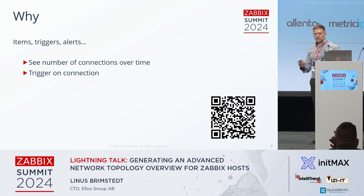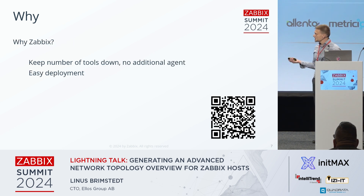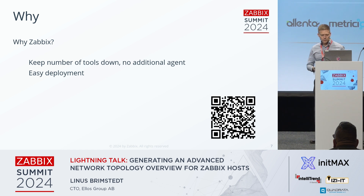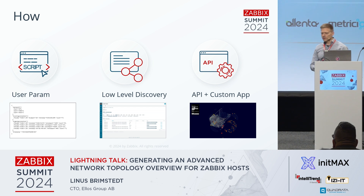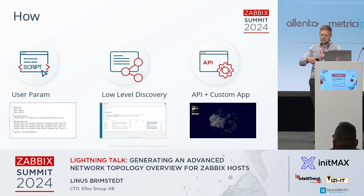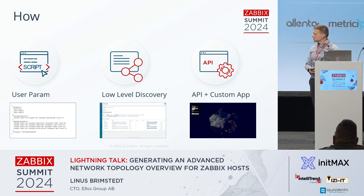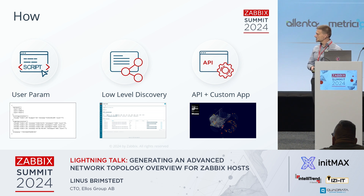Since this is using Zabbix, we have the full power of Zabbix triggers and graphs to use as well. I wanted to keep the number of tools down and have an easy deployment, and since Zabbix was already in place, it was easy. This all works by using a user param and a script to gather information about the network. Previous speakers used SNMP or manual link creation. My take is to instead query the operating system to see where it has active connections — like netstat. This user param generates a JSON which is fed into Zabbix low-level discovery, and then using Zabbix API and a custom application, we get a map.